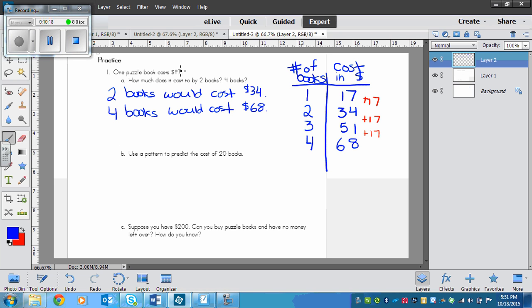So it asks us how much it would cost, so we answer in the form of a sentence. Now the next part, use a pattern to predict the cost of 20 books. So we need to continue because we've got our pattern right here. So we continue adding $17 to each time until we get to 20 books.